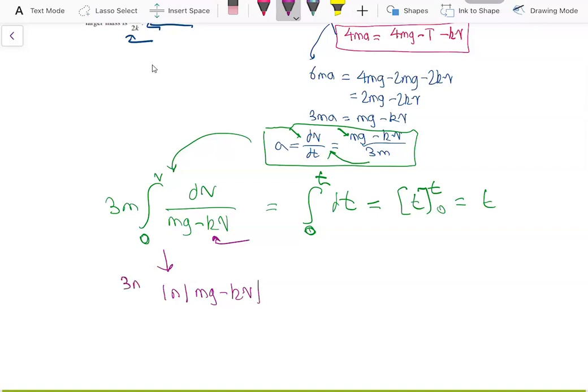And we have a 3m at the front, and we might have a chain rule going on here because of the negative k. So we want to divide by k here. And this is all from 0 to v, equals t.